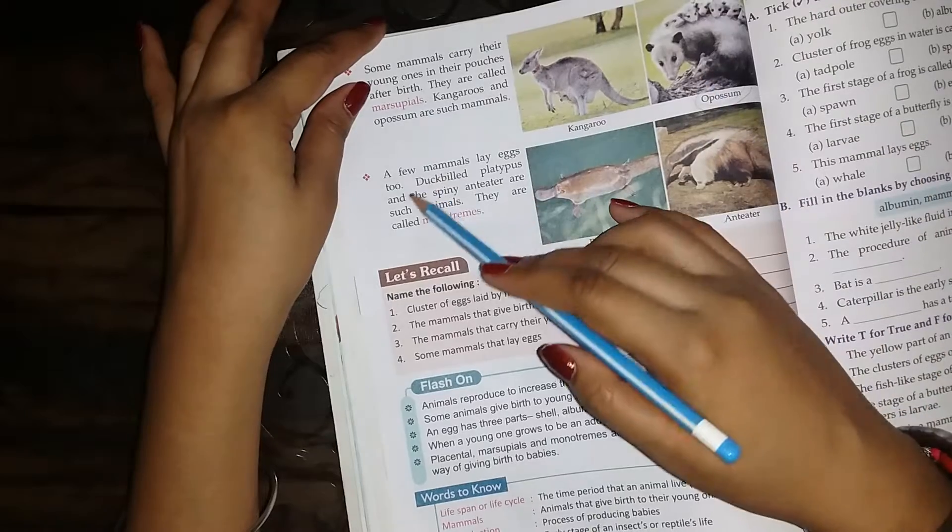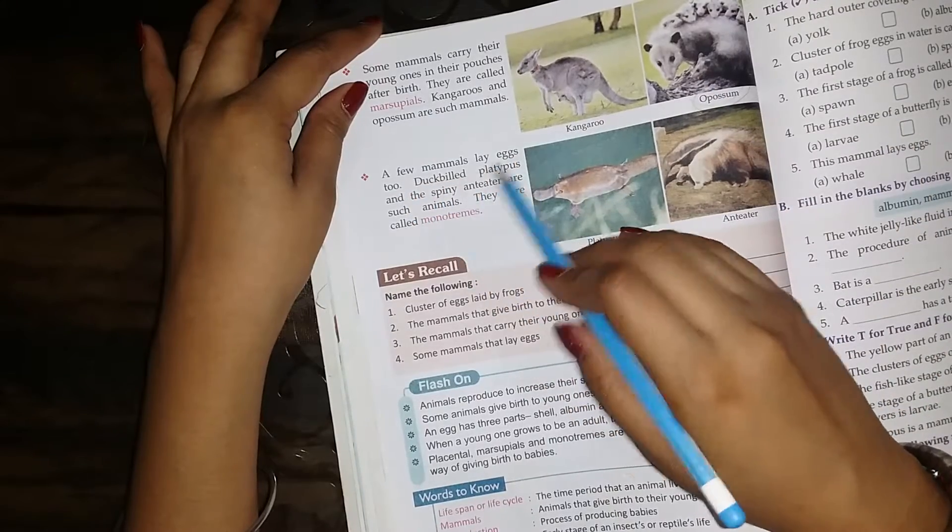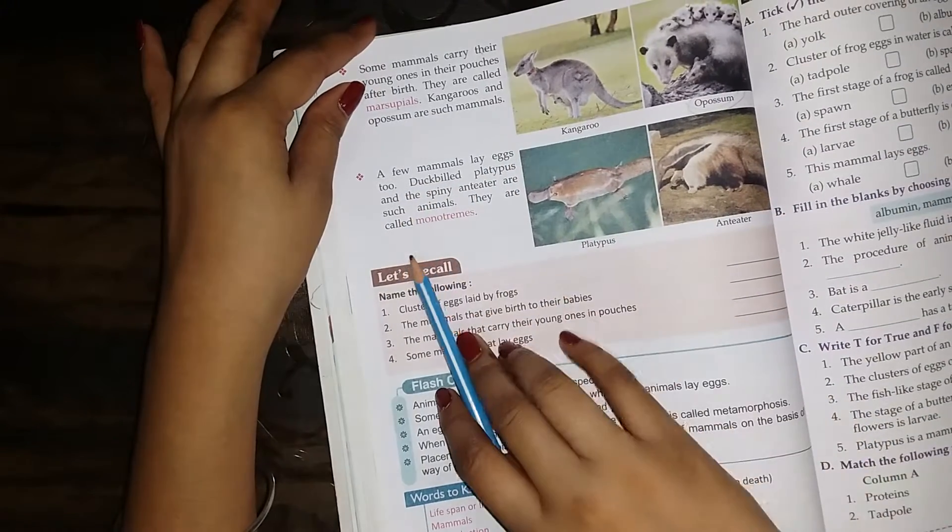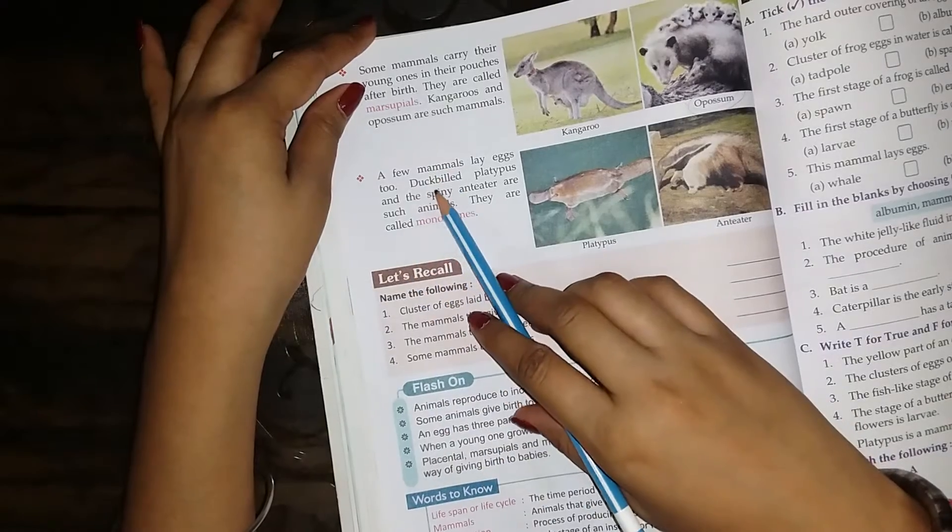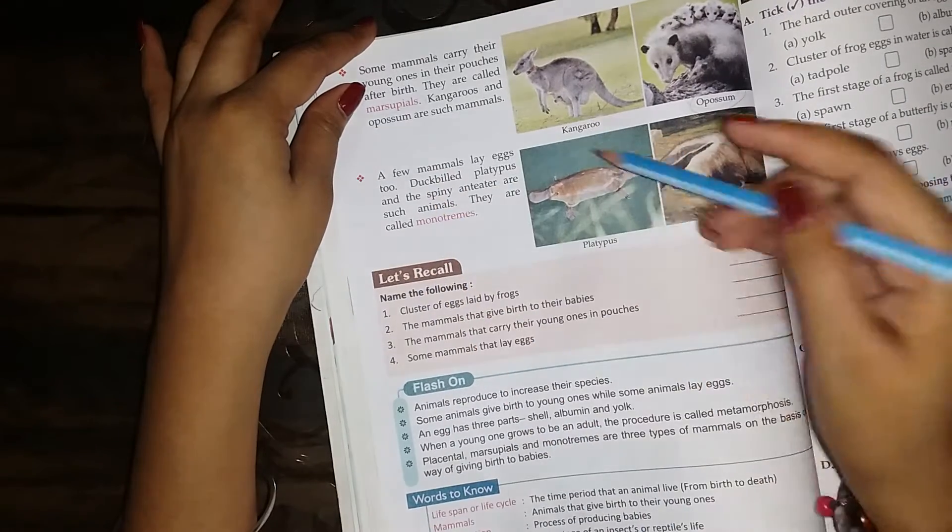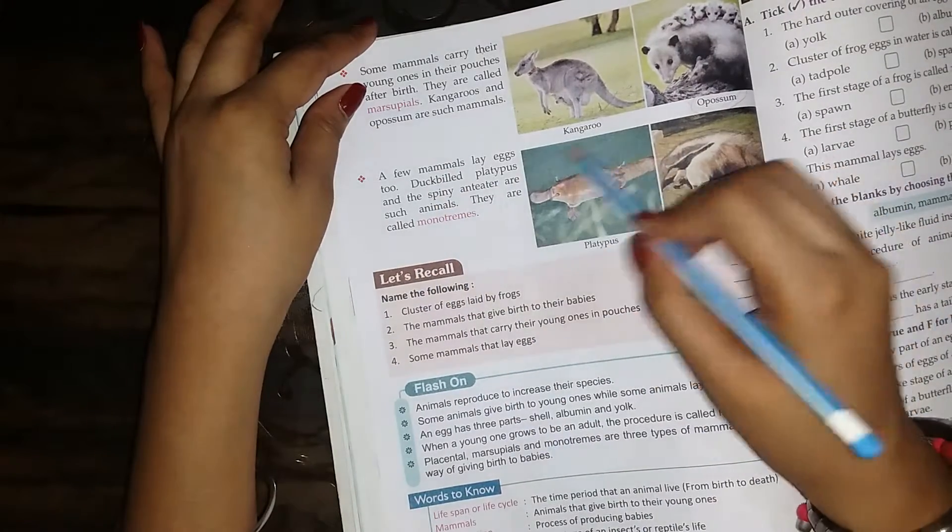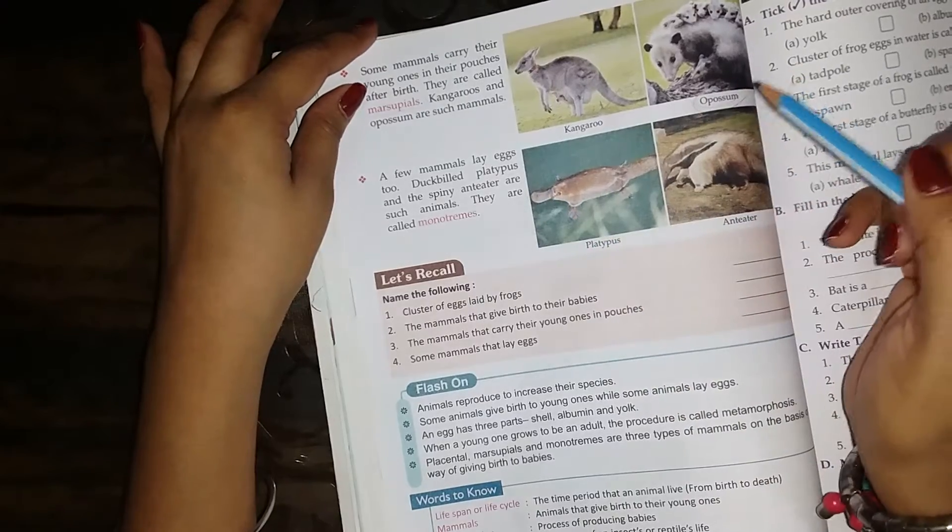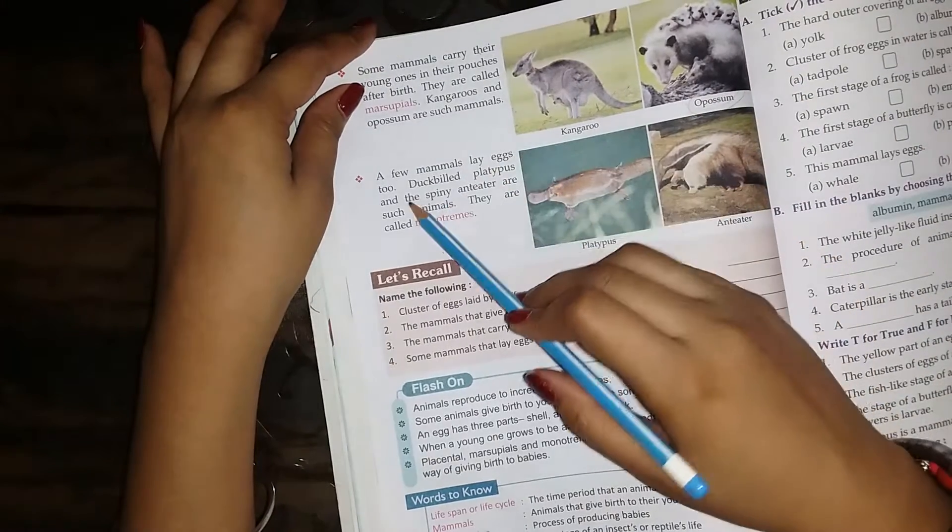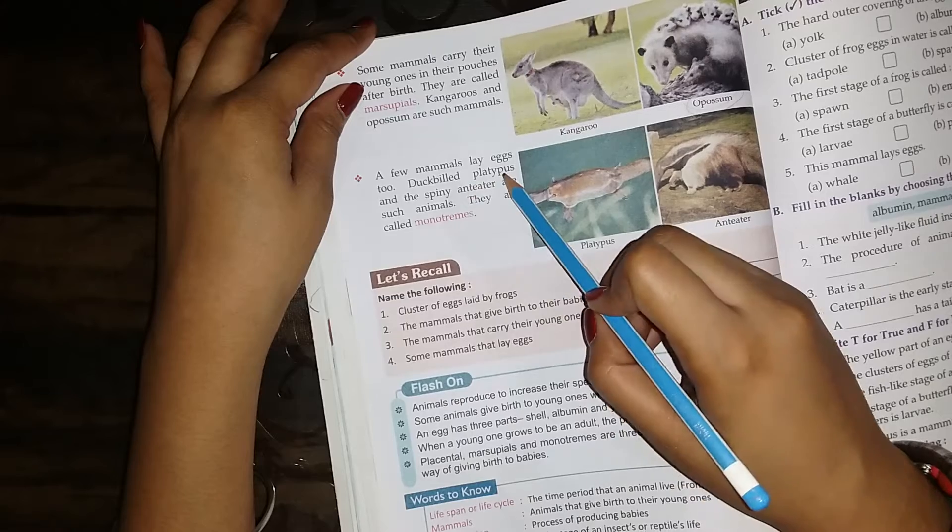Kangaroo and opossum are such mammals. They carry their babies in their pouches and these are marsupials. A few mammals lay eggs too. We have learned platypus, a duck-billed platypus.